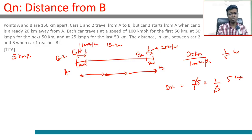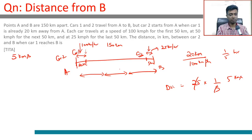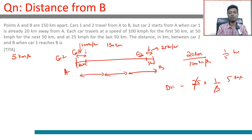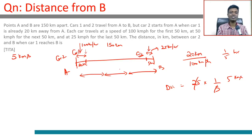The time car two takes to travel the last 5 kilometers equals the time car one took to travel the first 20 kilometers — that is the time gap between them. In general, if car one started t minutes before car two, car two will finish exactly t minutes after car one, since they travel identical trips over the same distance and speed pattern.